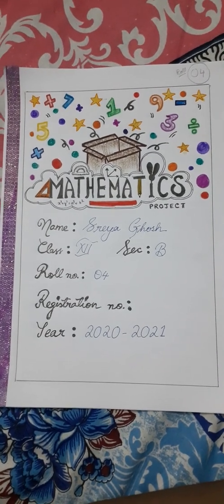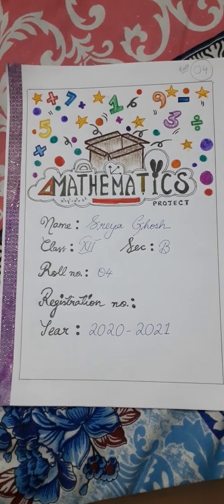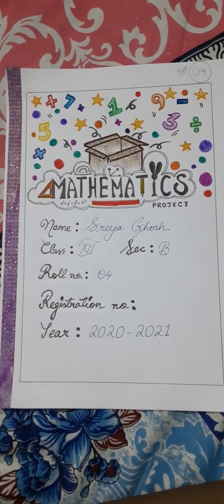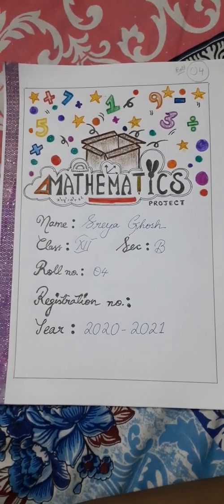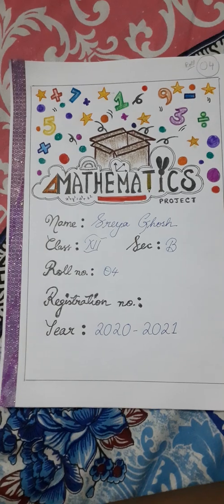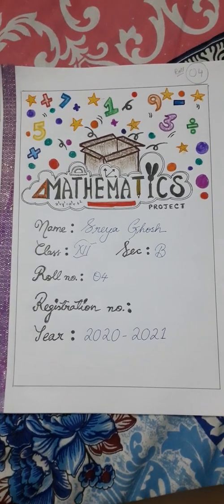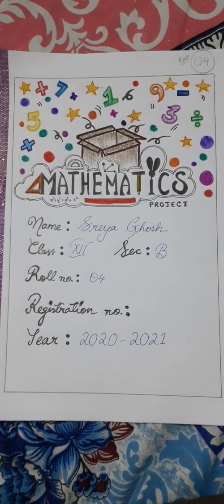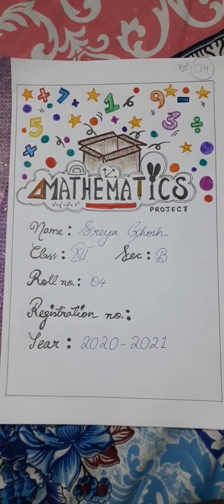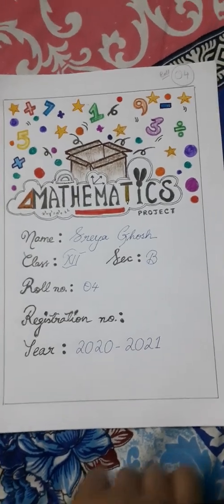This is our Class 12 maths project. I have used only A4 pages, stapled together to make it like a copy. To hide those stapler marks, I have used glitter tape. This is my cover page with name, class, section, roll number, and registration number.